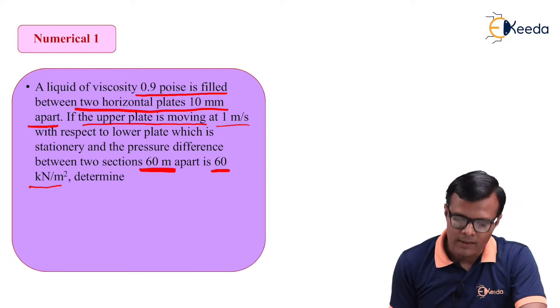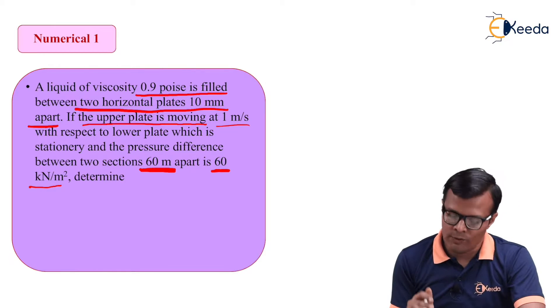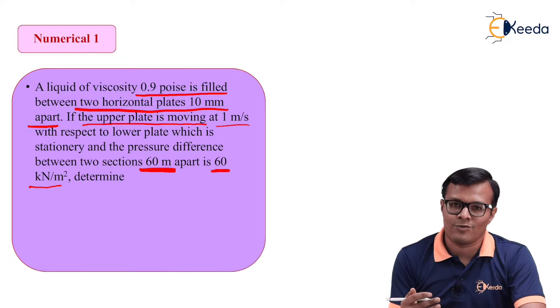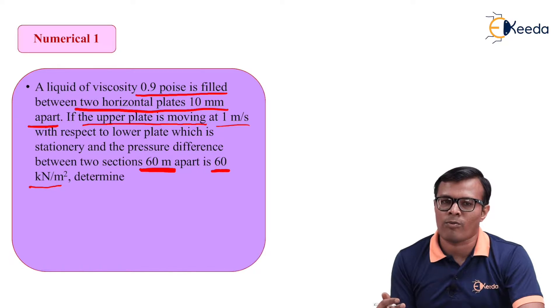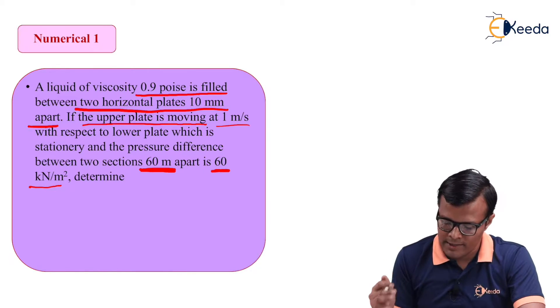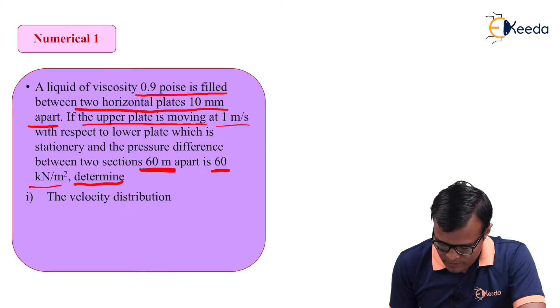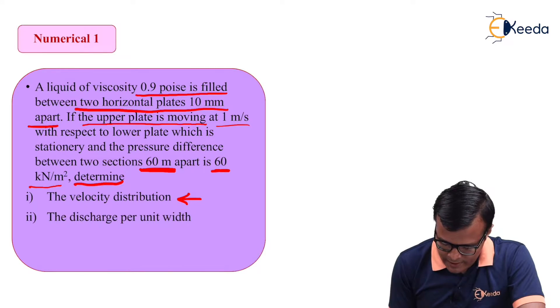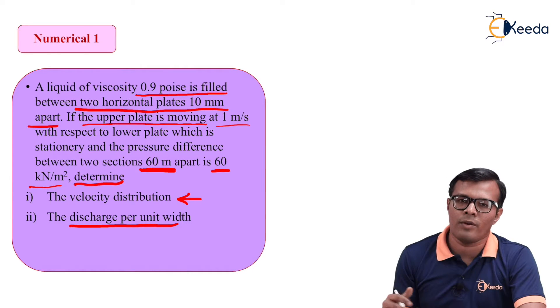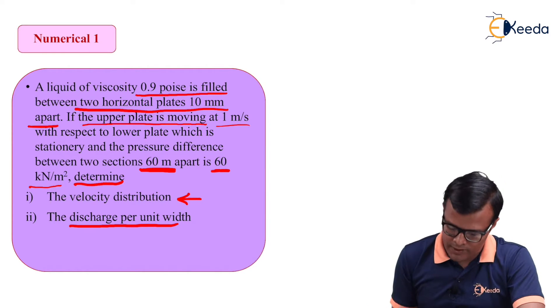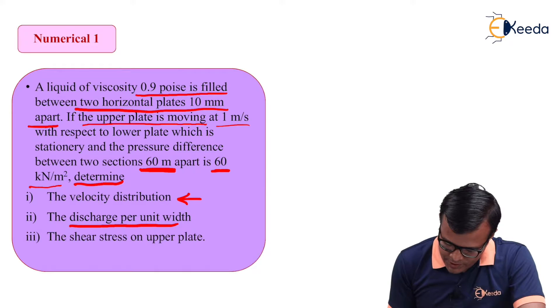So, ΔP by ΔX is already given to us. In our problem, some values are given. Let's note down the given data. It is asked to determine the velocity distribution. Secondly, discharge per unit width. How much will be the discharge for 1 meter width?